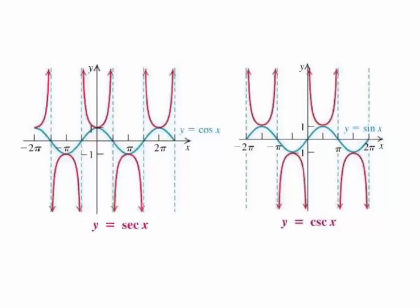In this video, we're going to talk about the graphs of secant and cosecant. Secant of x is just the reciprocal of cosine x, and cosecant is the reciprocal of sine.